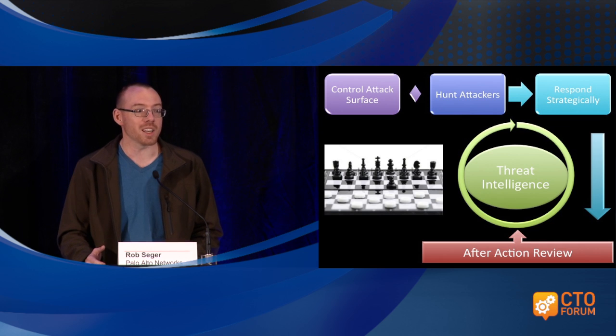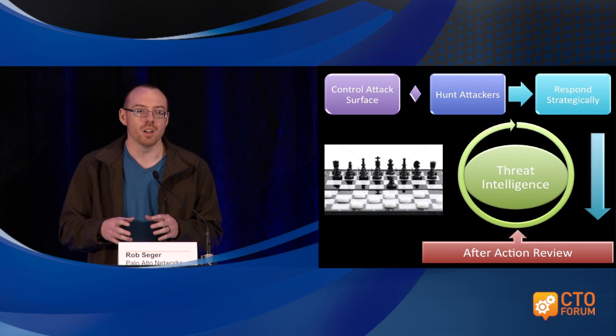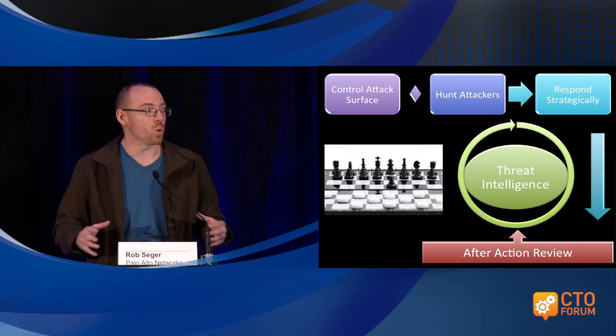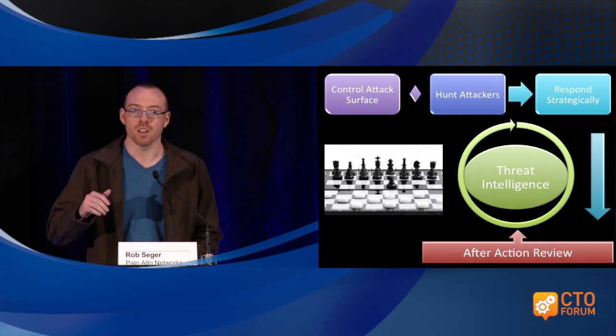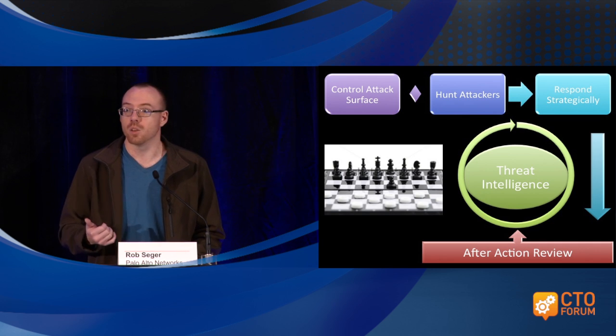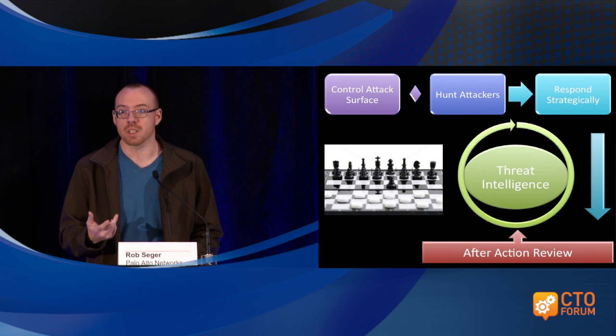The after action review likewise is generally focused solely in security — what did we do wrong, how can we do it better? It needs to be an entire organization event. Every piece of the organization should be required to help answer: who are they, what were they after, why did they come after us, and most importantly, where and how did we fail? Those three things become the foundation of quality threat intelligence, which can then be used by your security team to improve the other stages, creating a positive feedback loop.